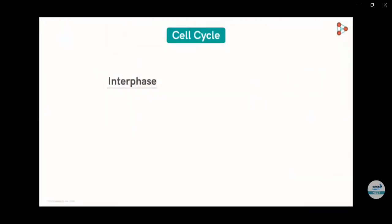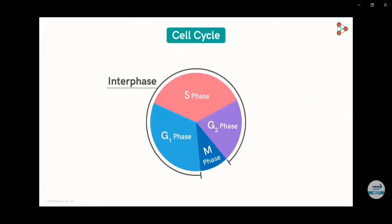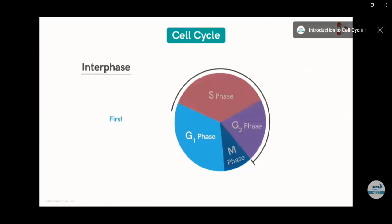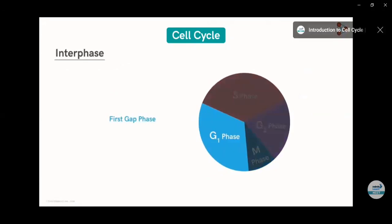In G1 phase, the number of organelles of a cell increase, the cell size increases, and enzymes which are necessary for S phase are actually synthesized here. About 90% of a cell spends its time in interphase.